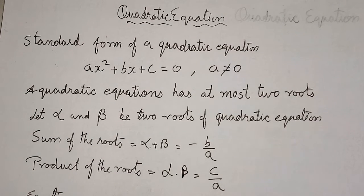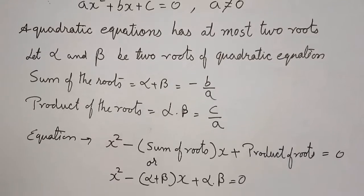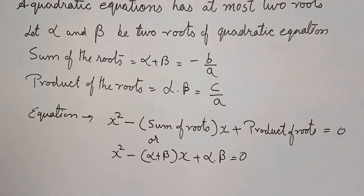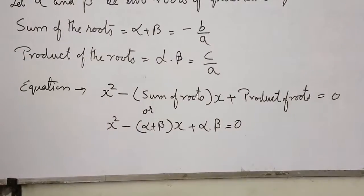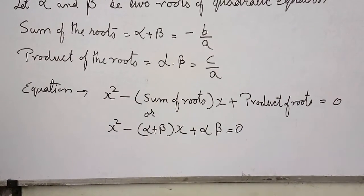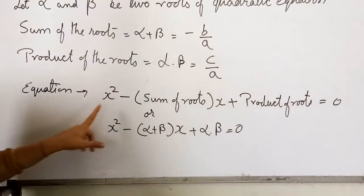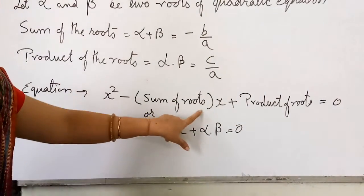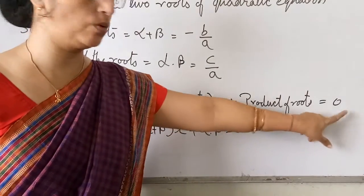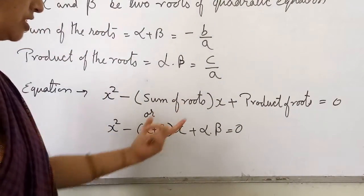If we have roots in the question, we can create the equation. This will help us solve equations, including using the prime factorization method. The equation is x² - (sum of roots)x + product of roots = 0.